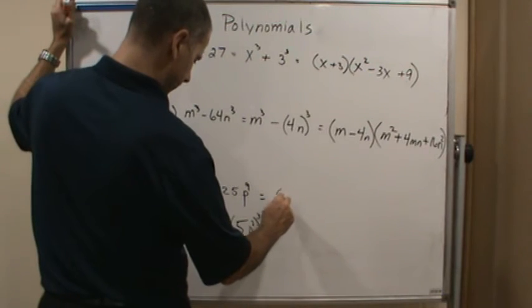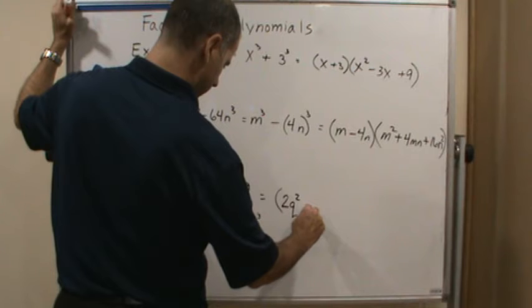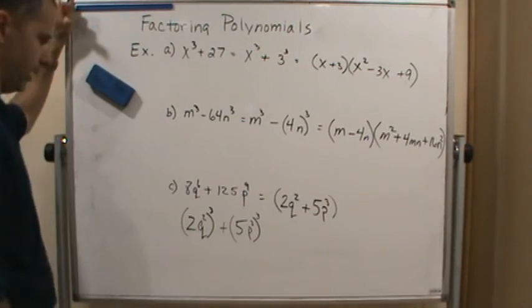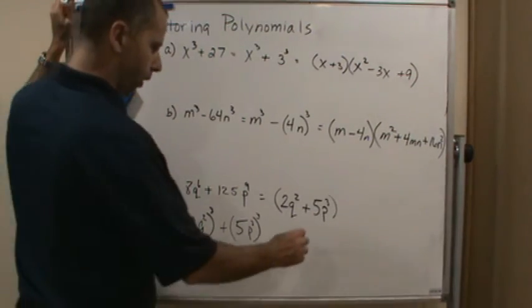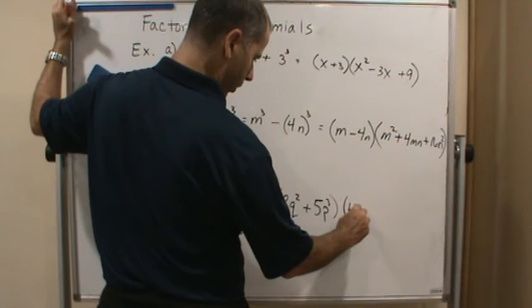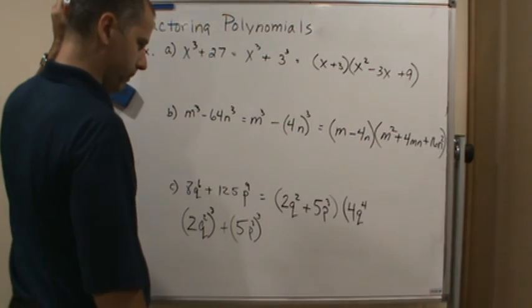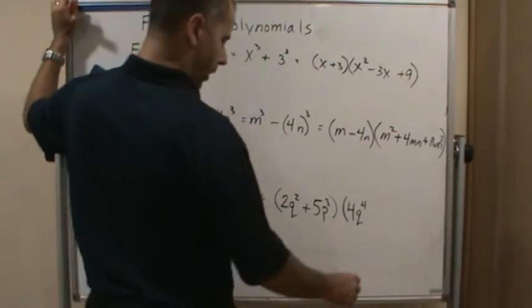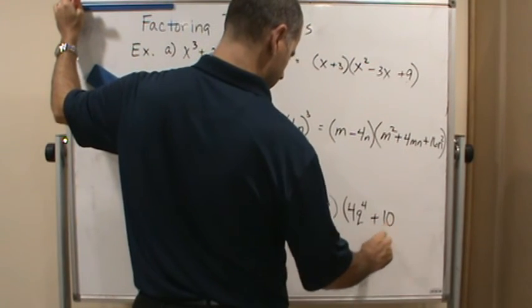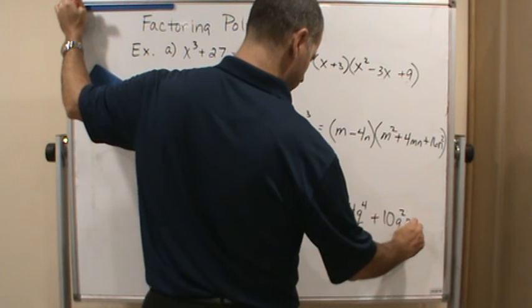So it's going to be 2q squared plus 5p cubed. That's the first one. And now the second one is going to be this squared, which is going to be 4q to the fourth. Plus, now it's going to be these two squared, which is going to be 10q squared p cubed.